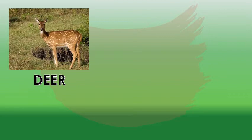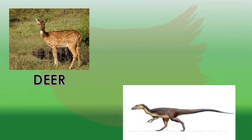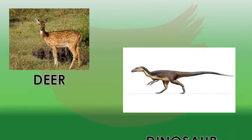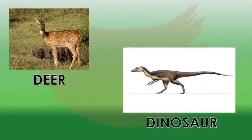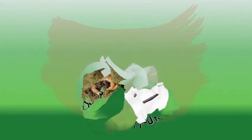What is this? This is deer. What is this? This is deer. What is this? This is dinosaur. What is this? This is dinosaur. This is a cute little dog. What is this? This is dog.